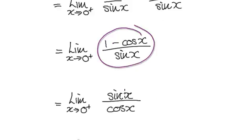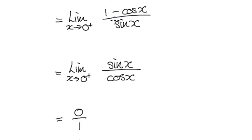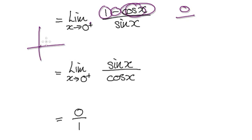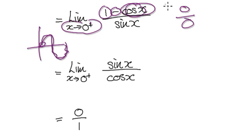Now looking at this as x approaches 0 from the right hand side: the numerator — 1 minus cosine x — well cosine of 0 is 1, so 1 take away 1 will be 0. And the denominator — sine x — as you're approaching 0 from the right hand side, sine x is heading towards 0 as well. So we've got a case where it's 0 over 0.